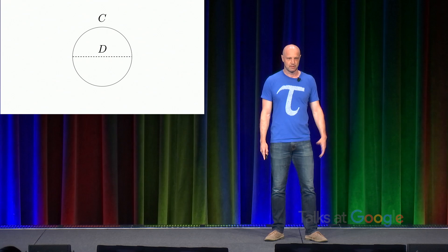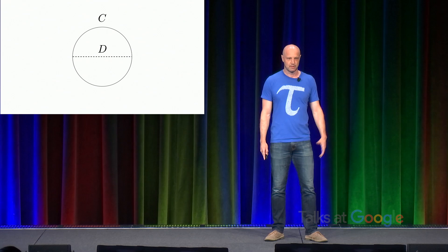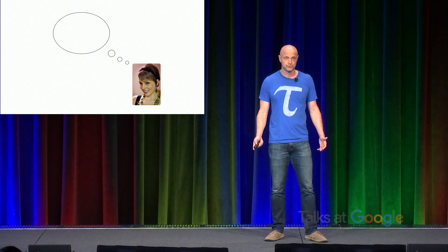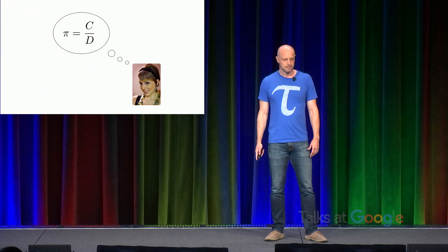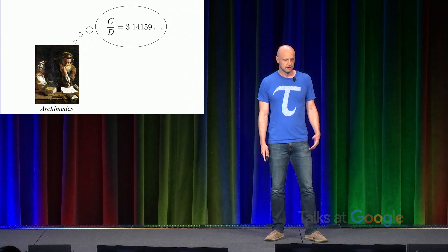If you make this choice, you can characterize the geometry of a circle by dividing the circumference by the diameter, yielding the traditional circle constant, pi. Pi was famously approximated by Archimedes of Syracuse. In modern notation, C over D is approximately equal to 3.14159, and so on.